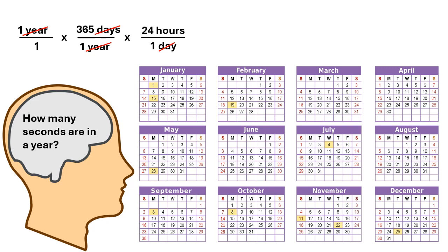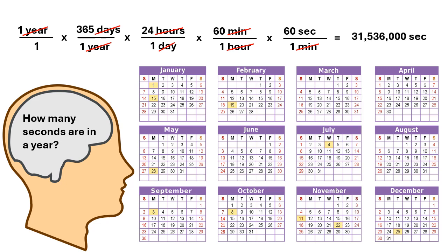I'm still not at seconds, so I keep going. In one hour there are 60 minutes, so the two hour units cancel out. Almost there — I need one more step. In one minute there are 60 seconds, and the two minute units cancel out. Now I get out a calculator and solve: 1 times 365 times 24 times 60 times 60 equals 31,536,000 seconds. Dimensional analysis showed me to multiply all these numbers together — I don't have to divide anything in this particular problem.